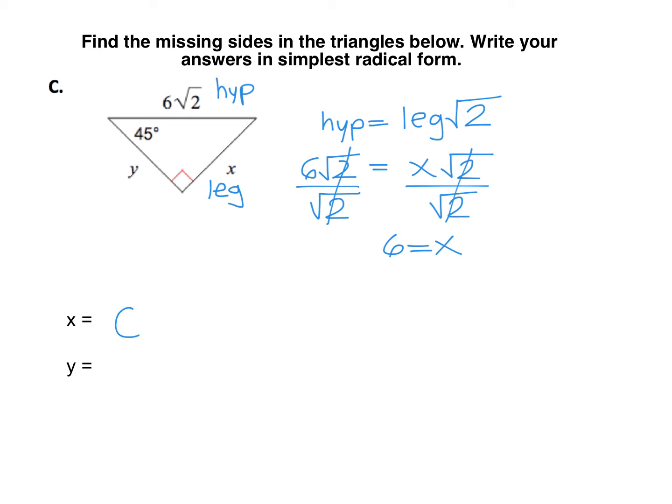So my x is 6, and since the legs are congruent, y is also 6. Type 6 in both the text box for x and for y.